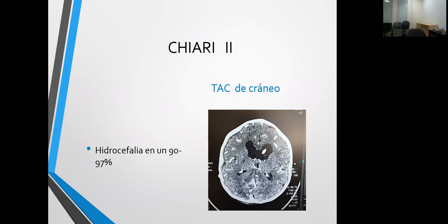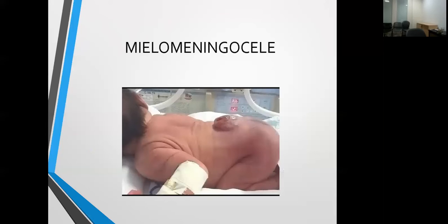Muchos ya nacen con hidrocefalia cuando nacen con el mielomeningocele, pero otros la desarrollan cuando se cierra el mielomeningocele. Por eso hay que ser muy precavidos: al cerrarlo, tenemos que vigilar que no se produzca hidrocefalia. Si no estamos al pendiente del perímetro cefálico y el ultrasonido transfontanelar, puede empezar a acumular líquido, abrir nuestra herida del mielo y causar secundariamente una infección. En nuestra experiencia operando muchos pacientes con mielomeningocele, solo el 1% no ha necesitado válvula; la gran mayoría amerita válvula.